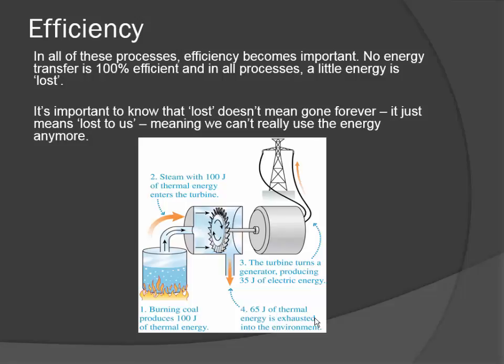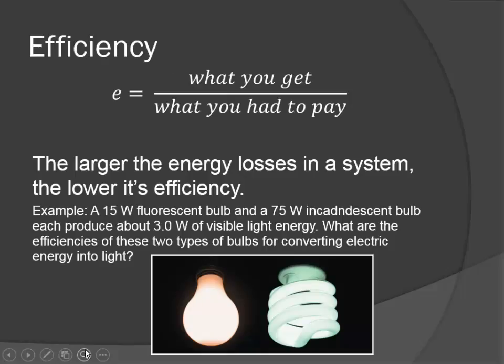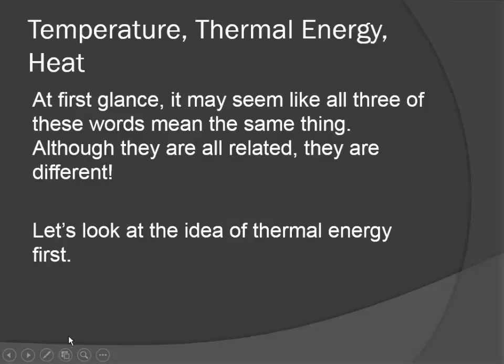And we typically say that as being heat. We'll talk about heat a little bit in a few more slides. But this loss of thermal energy becomes really important because this is going to help us define how efficient this process is. So let's take a look mathematically at efficiency. Efficiency is just a ratio between what you get out of the system divided by what you had to pay or what you had to put into the system. So this is typically denoted as a percentage, so you would take this fraction and then multiply it by 100. The larger the energy loss that you have in a system, the lower its efficiency.